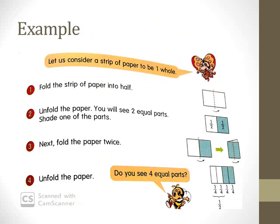Consider a strip of paper to be one whole. Fold it in half. After doing that, when you unfold it, you will find it is divided into two equal parts. If you shade one of them, each part is one over two. Now fold it again. When you unfold it, you will see it is now divided into four equal parts — the same rectangle is now divided into four equal parts.